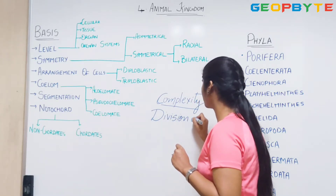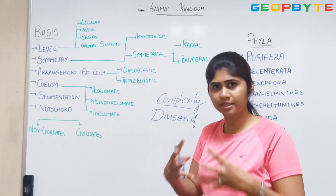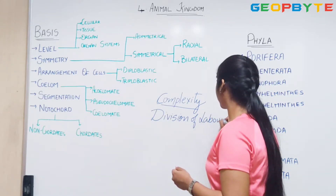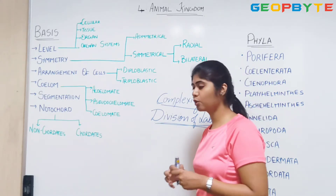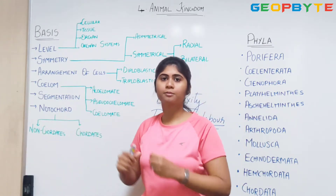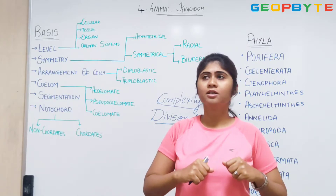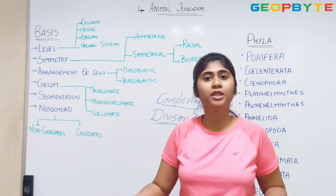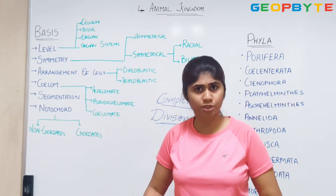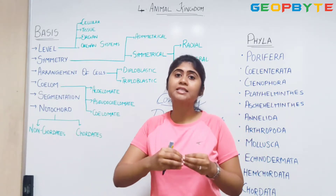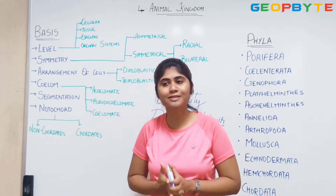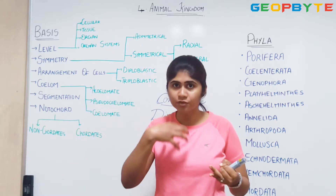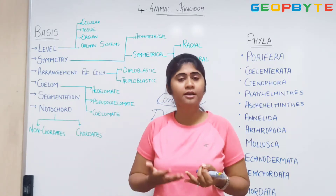In any office or in any organization or at your home, we have a lot of work to be done. If you take the case of your office, there has to be a finance department, there has to be an admissions department. So there are different departments which control different functions. If you take the body also as an organization, it has different functions — like we breathe in and breathe out, that is respiration; we eat food that gets digested, that is digestion.